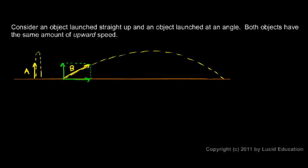If these vectors both have the same amount of vertical speed, then they will end up reaching the same height and spending the same time in the air. If we were to draw a line across representing the height they reach, they both end up reaching the same maximum height, and spending the same amount of time in the air. It's the vertical part of the motion that determines how high something goes and how long it stays in the air — and the horizontal motion is completely independent of that.